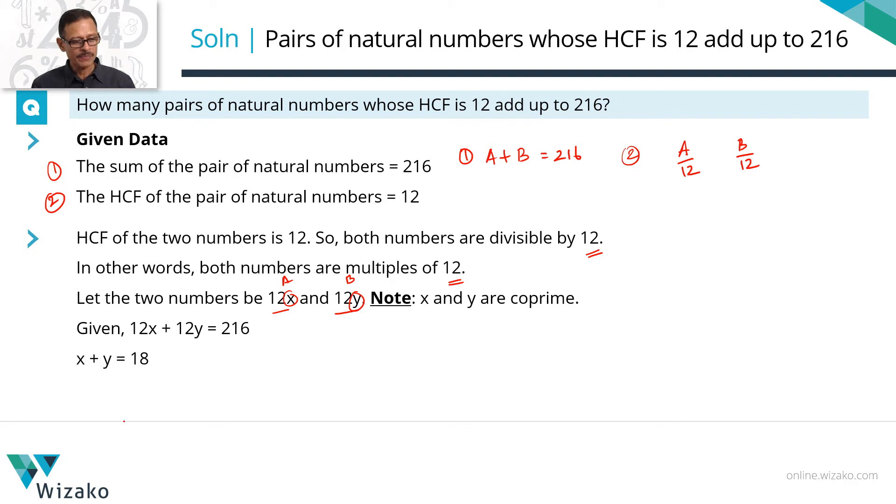216 by 12 is 18. So this is the equation that we are going to take forward and find the values of how many pairs of numbers exist.